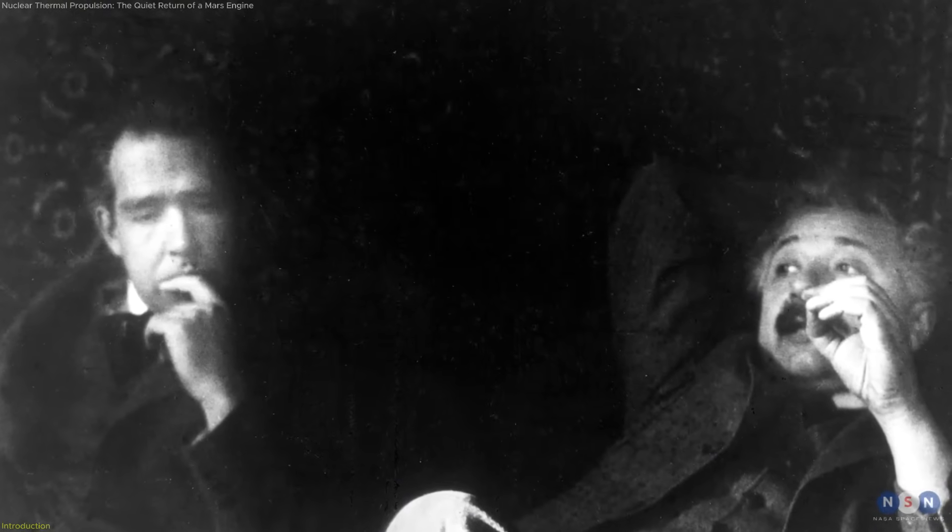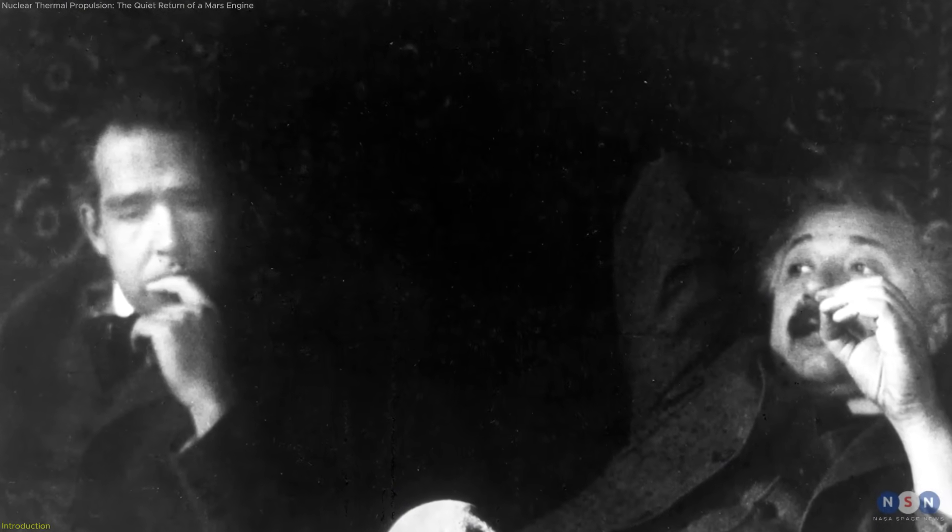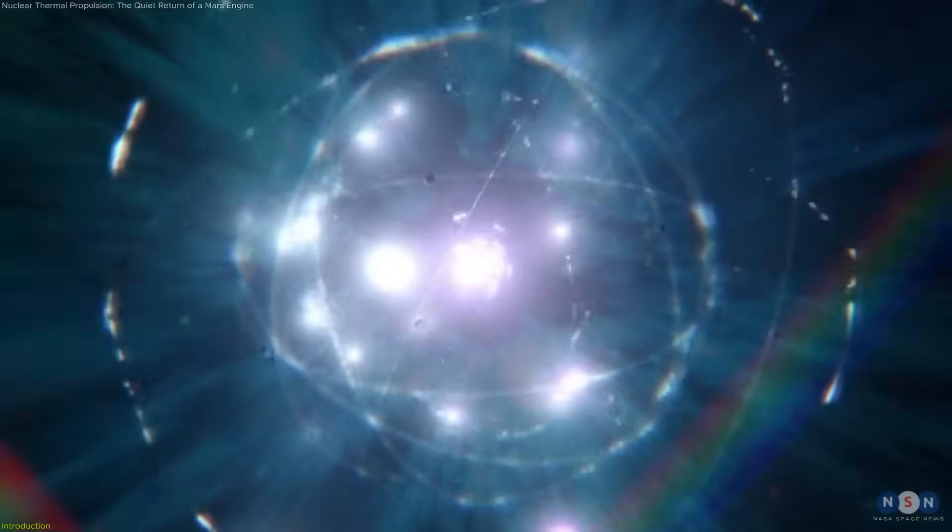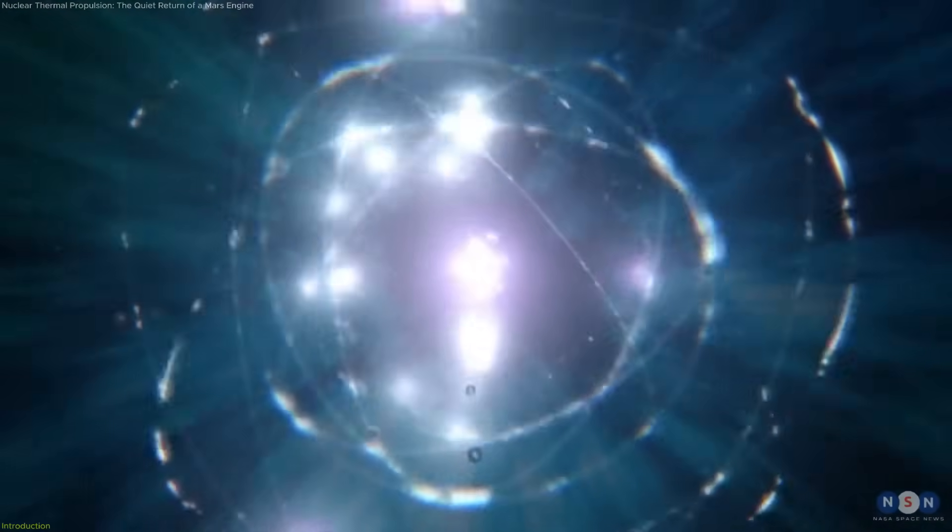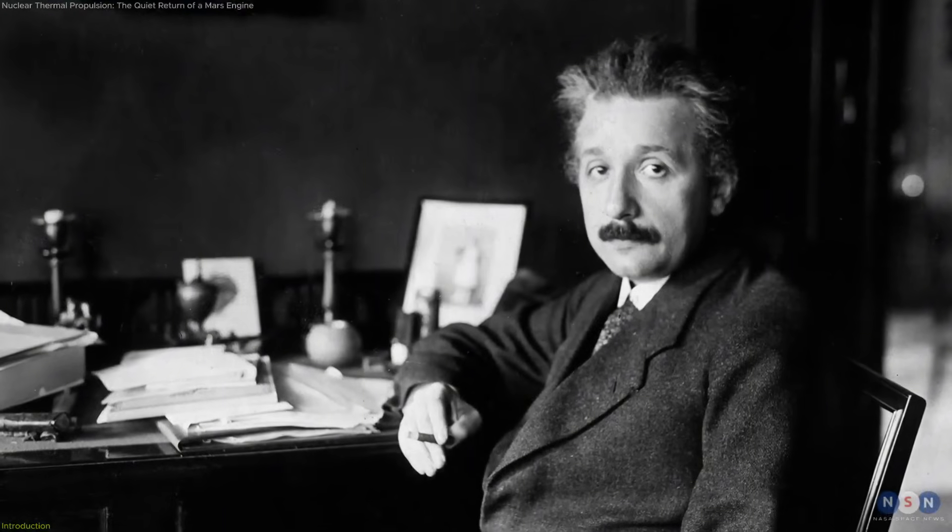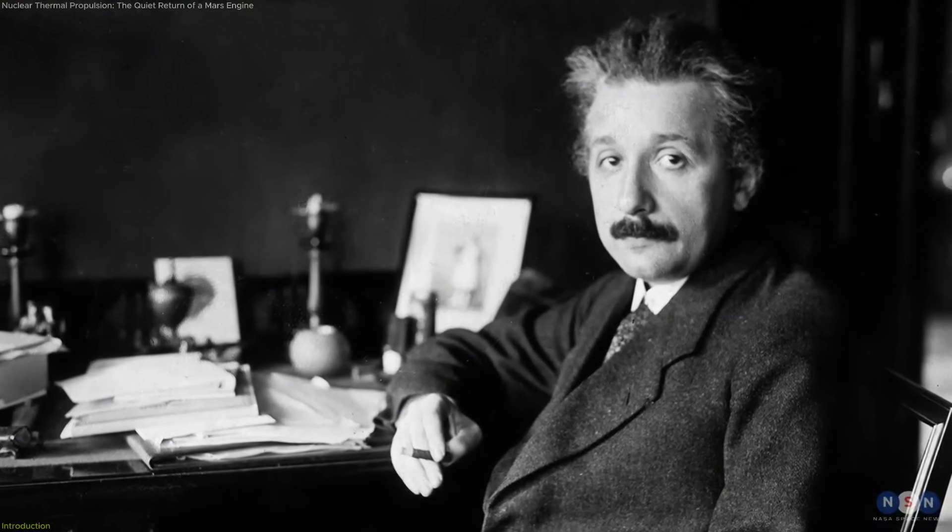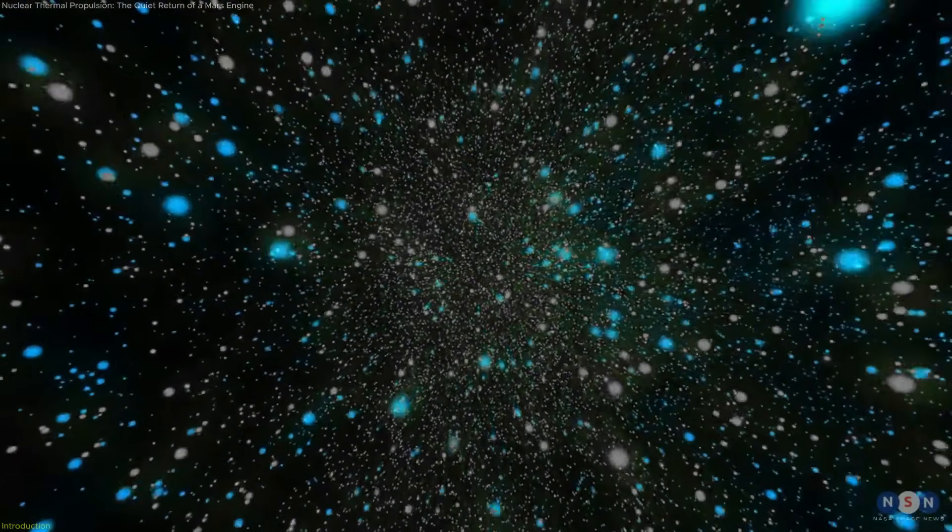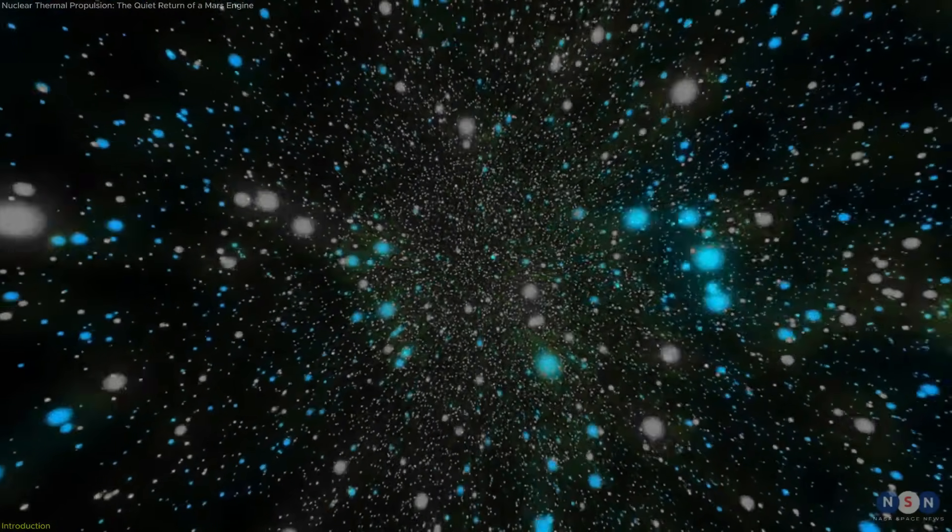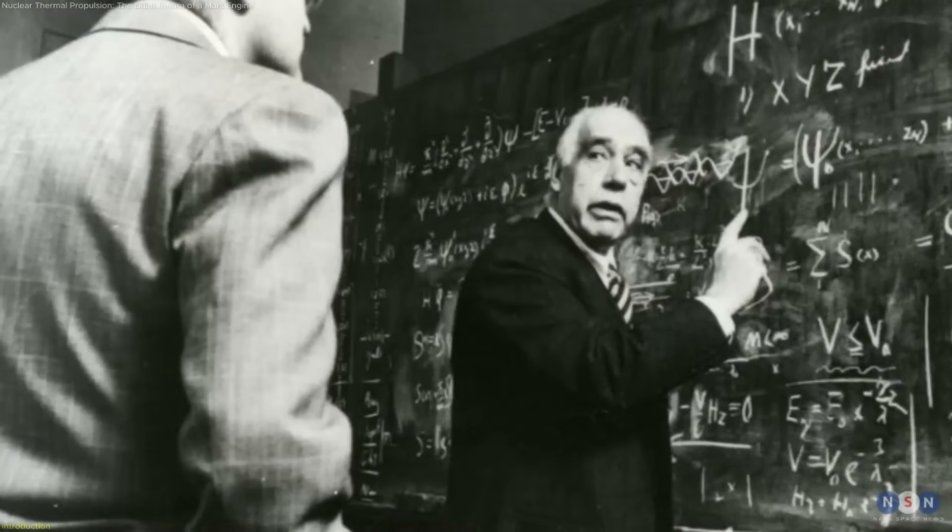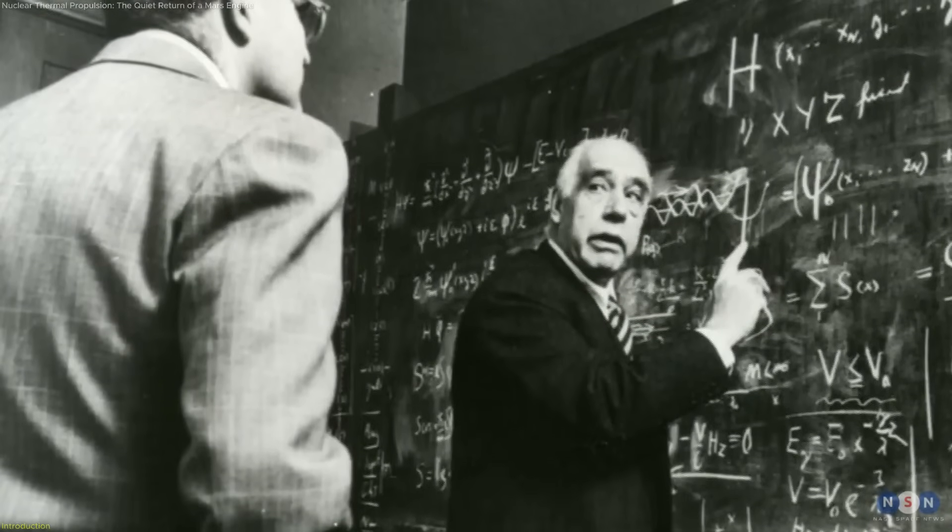In the 1920s, Albert Einstein and Niels Bohr famously disagreed over whether quantum mechanics described reality itself or merely our limited knowledge of it. Einstein believed that with a clever enough experiment, one could observe both the particle and wave behavior of a photon at the same time. Bohr argued that this was fundamentally impossible.